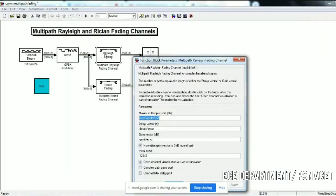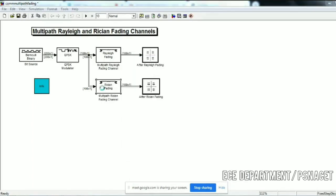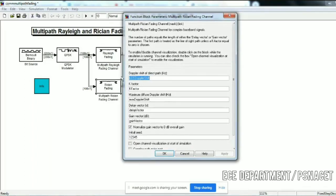For Rician fading, maximum Doppler shift for Rayleigh is given as 5. I am selecting the delay vector, the gain vector in decibels, and the initial seed. For Rician fading, there is line of sight Doppler shift. We select the delay vector, gain vector, and initial seed.